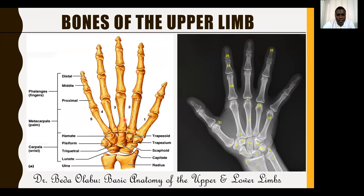Bones of the hand include carpal bones, metacarpal bones, and phalanges. The phalanges are 14, the metacarpals are 5, and the carpal bones are 8 — remember in the foot there were 7.